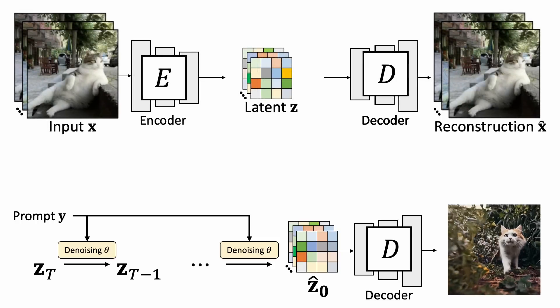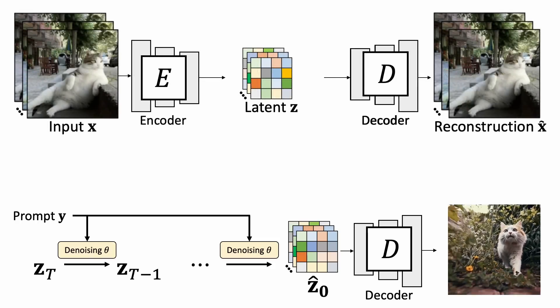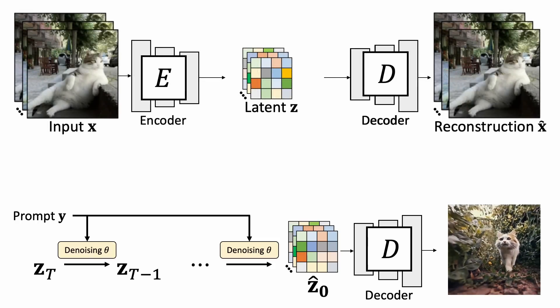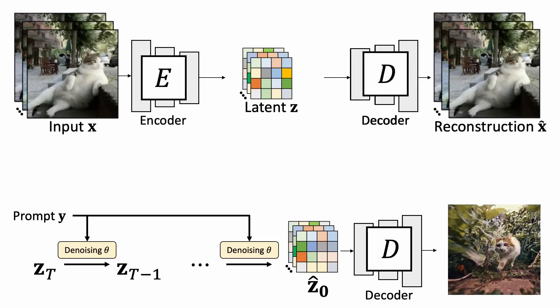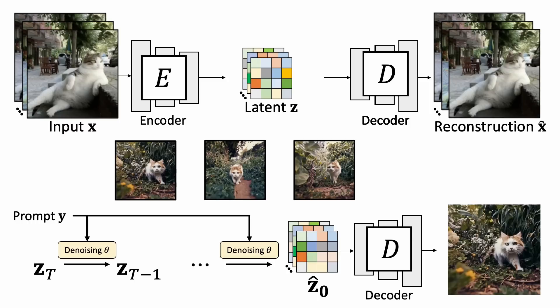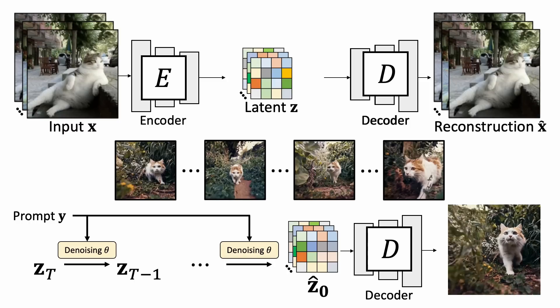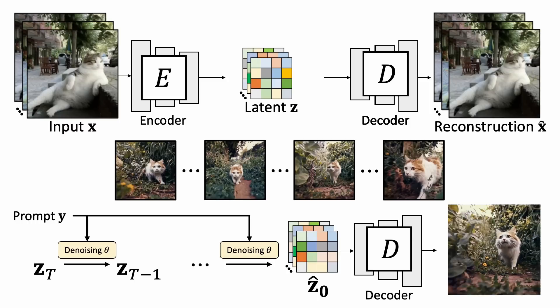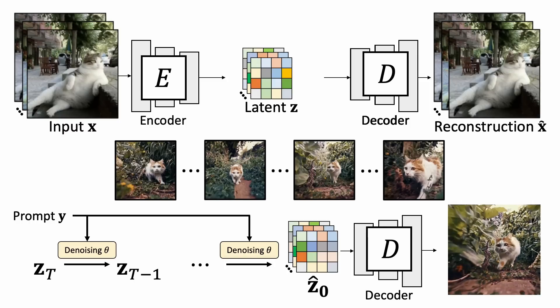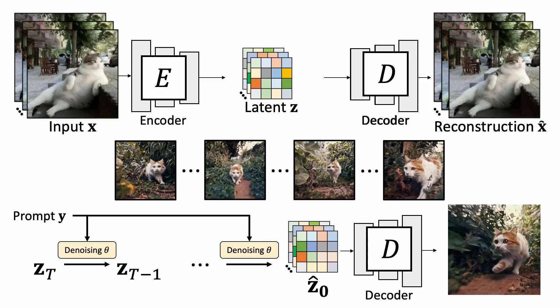But how does Sora generate long videos with consistent content? We don't know for sure. One potential approach is to generate a sparse set of keyframes and use them as conditions to generate the remaining contents.